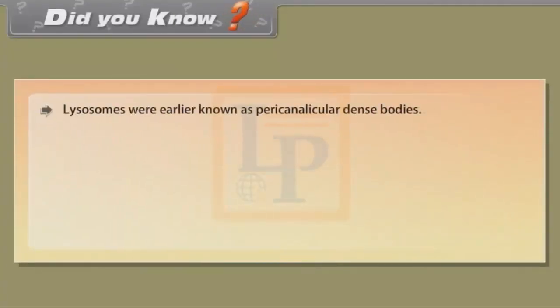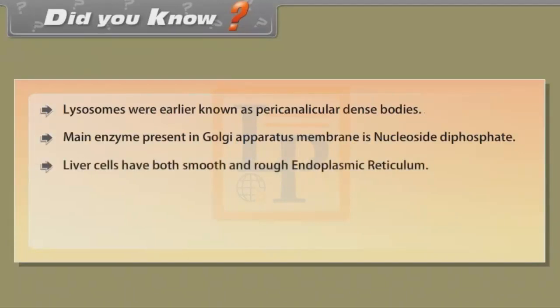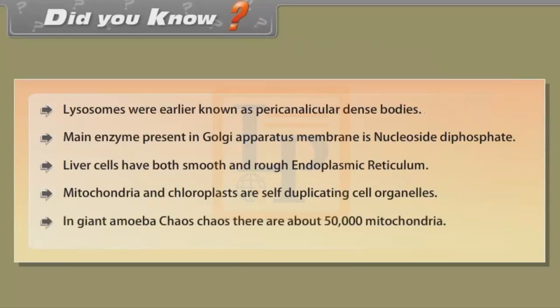Did you know? Lysosomes were earlier known as pericanalicular dense bodies. The main enzyme present in Golgi apparatus membrane is nucleoside diphosphate. Liver cells have both smooth and rough endoplasmic reticulum. Mitochondria and chloroplasts are self-duplicating cell organelles. In giant amoeba Chaos chaos, there are about 50,000 mitochondria.